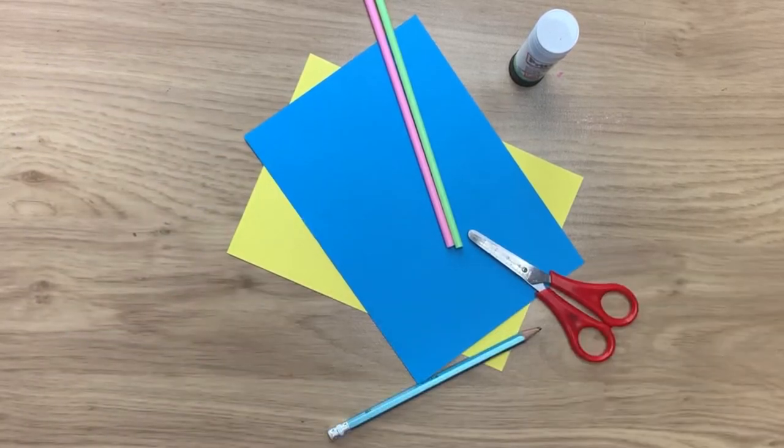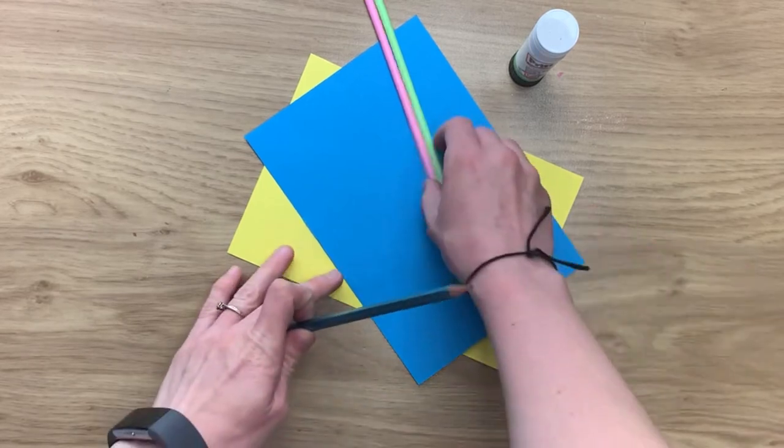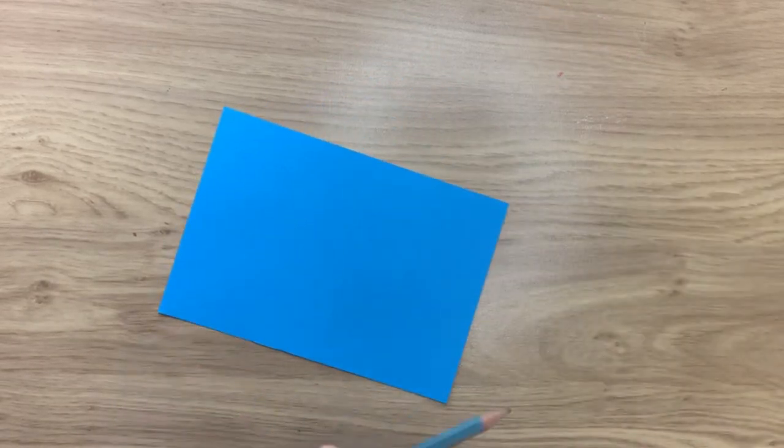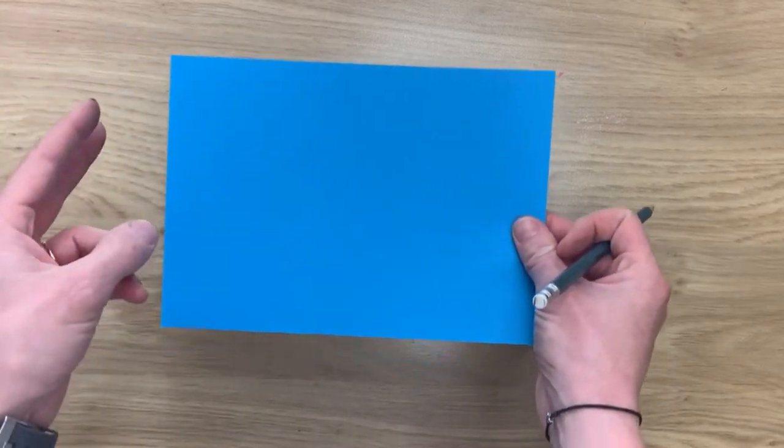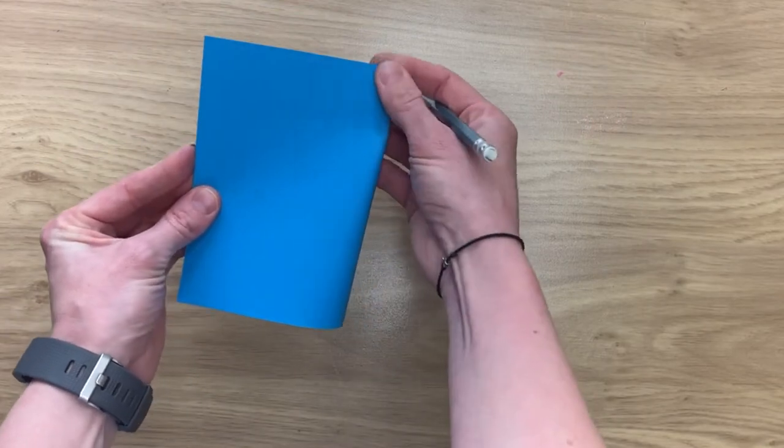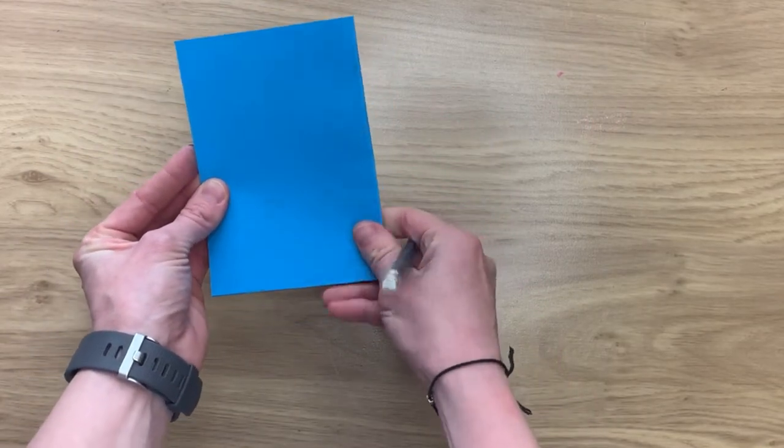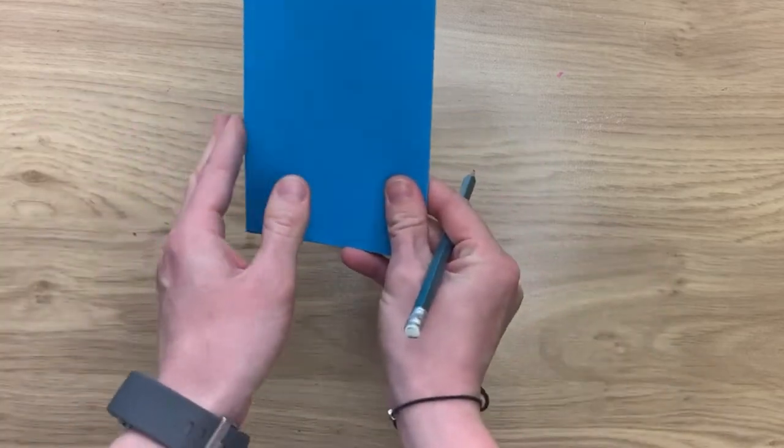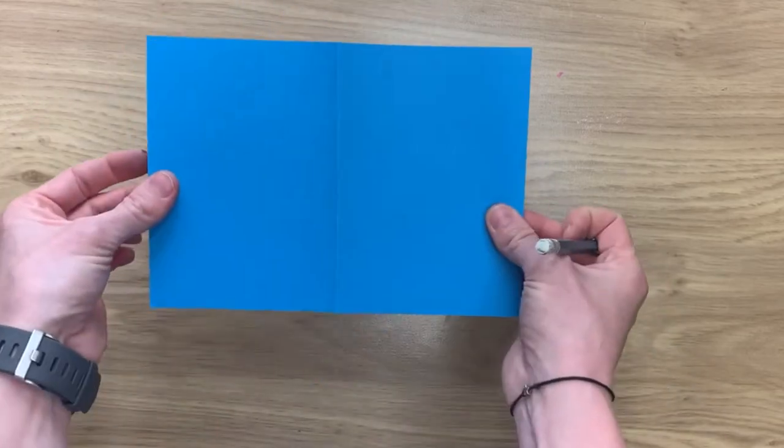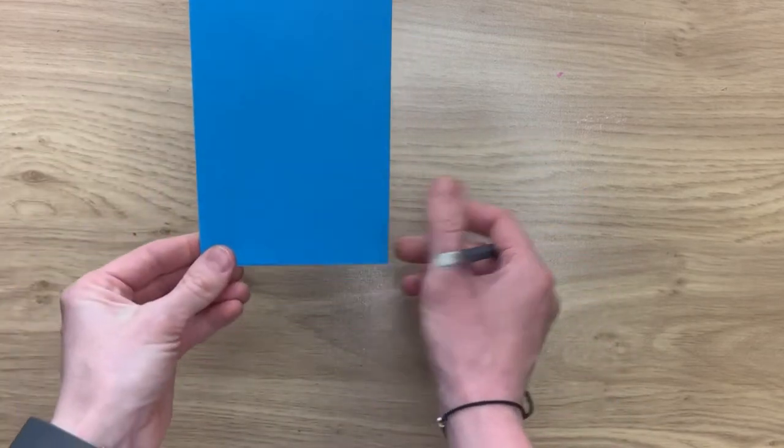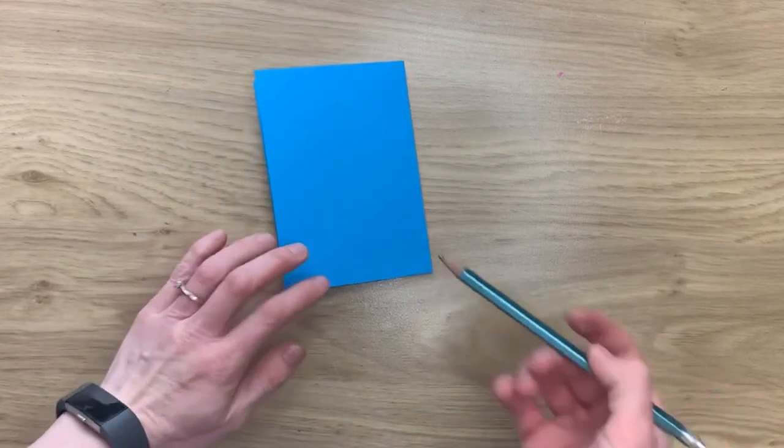Okay so now we've seen what we need. The first thing we need to do is to draw our rocket. Now we need two rockets exactly the same size so when I'm doing this I tend to fold my piece of paper in half. So this is an A5 sheet of paper folded in half just so you get an idea of how big the rocket's going to be and you need to draw a rocket on one half of that.